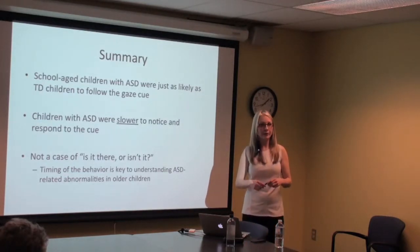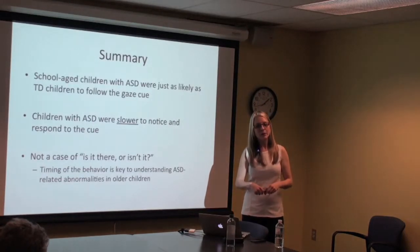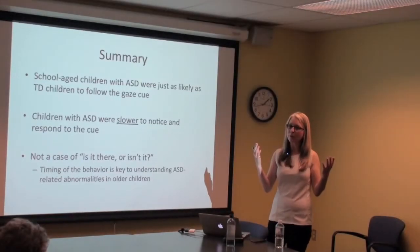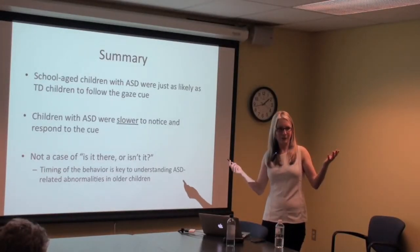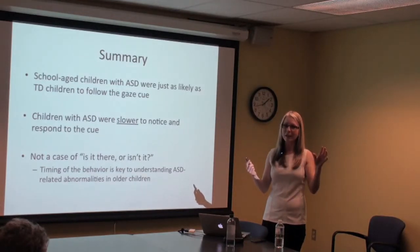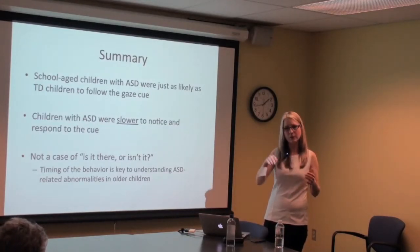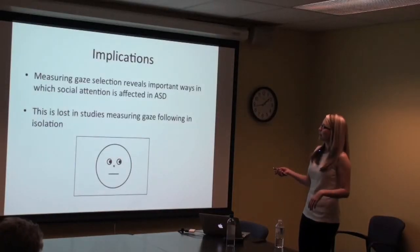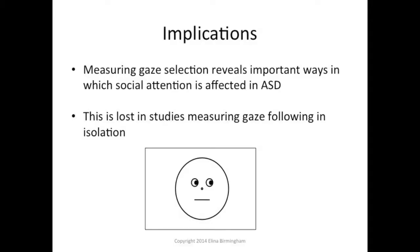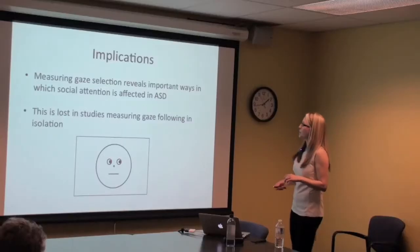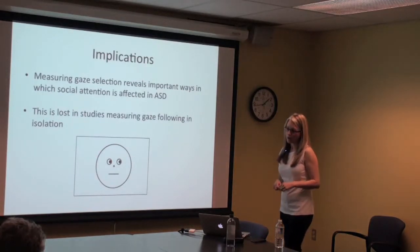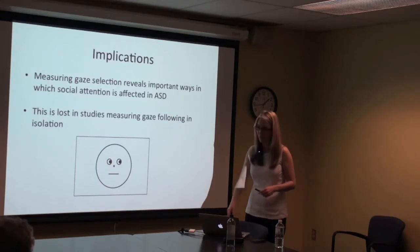I hope my research has convinced you that this process of selecting information in the real world is critical to understanding social attention — and this is lost in studies that measure only the shift of attention from the cue to where it's looking. A lot of these studies are missing out on this initial selection process, which I think tells us a lot about autism.